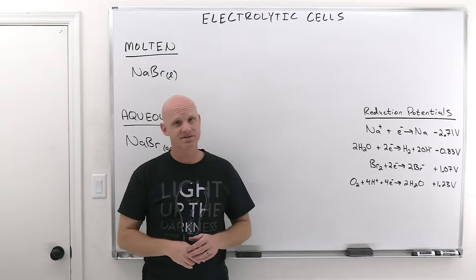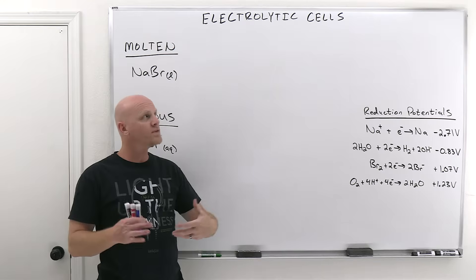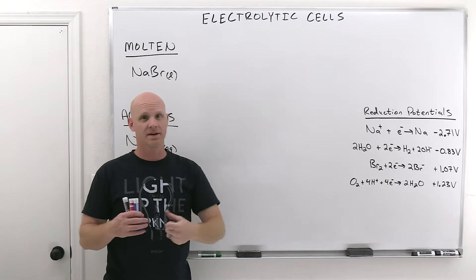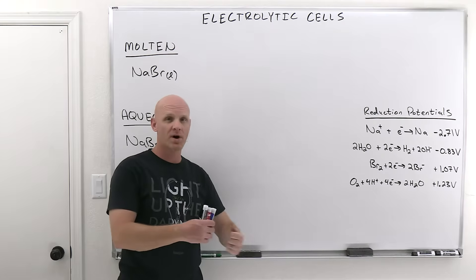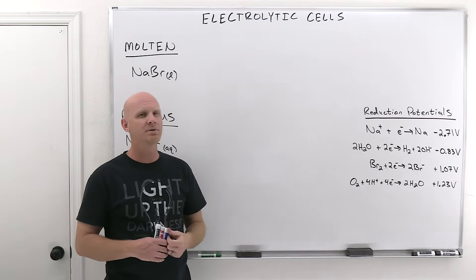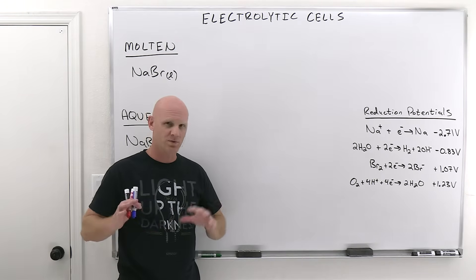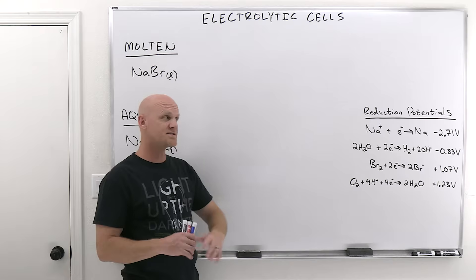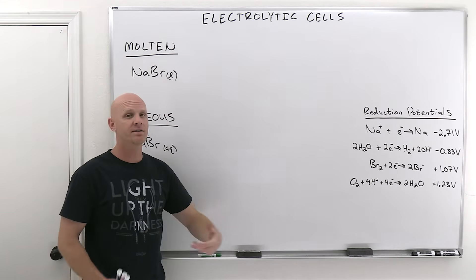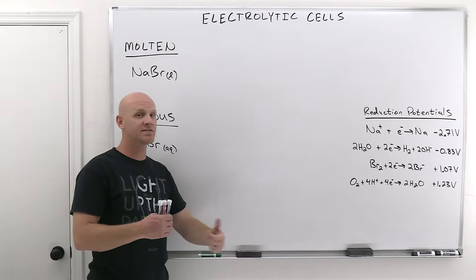These last two lessons are going to deal with electrolytic cells and electrolysis. In the first one here, we're going to take a qualitative look at these electrolytic cells. In the second one, we're going to take a quantitative look — learning how to predict how much of the products you might create. We're going to be largely learning how to predict the products.